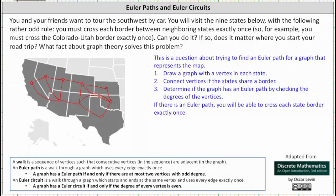Now to determine the degrees of each vertex. Starting in California and working clockwise, we have degree two, degree three, degree three, degree four, degree two, degree four, degree two, degree four, and degree four.